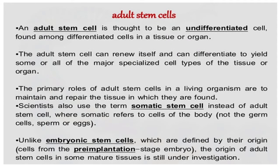Adult stem cells are thought to be undifferentiated cells found among the differentiated cells in tissue or organs. Adult stem cells are those stem cells which are present in adults. These are undifferentiated type of cells which are all the same, found among the differentiated cells in tissue and organs. The differentiated cells are present in the region.